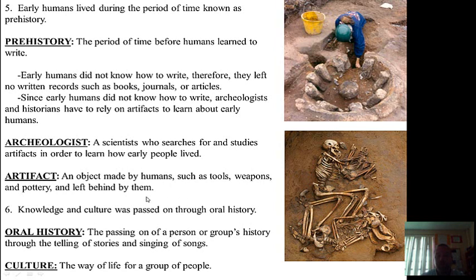Knowledge and culture was passed on through oral history. Early humans did not know how to write, so if they're trying to teach their children about their culture or their history, how do they teach them? They didn't have textbooks or the internet. What they did do was use oral history. Oral history is the passing on of a person or group's history through the telling of stories and the singing of songs. Think about a family holiday — when your family gets together and you sit down with grandma or grandpa and ask them about their younger life, they tell you a story. That's oral history. Culture is the way of life for a group of people — it's the way people live.